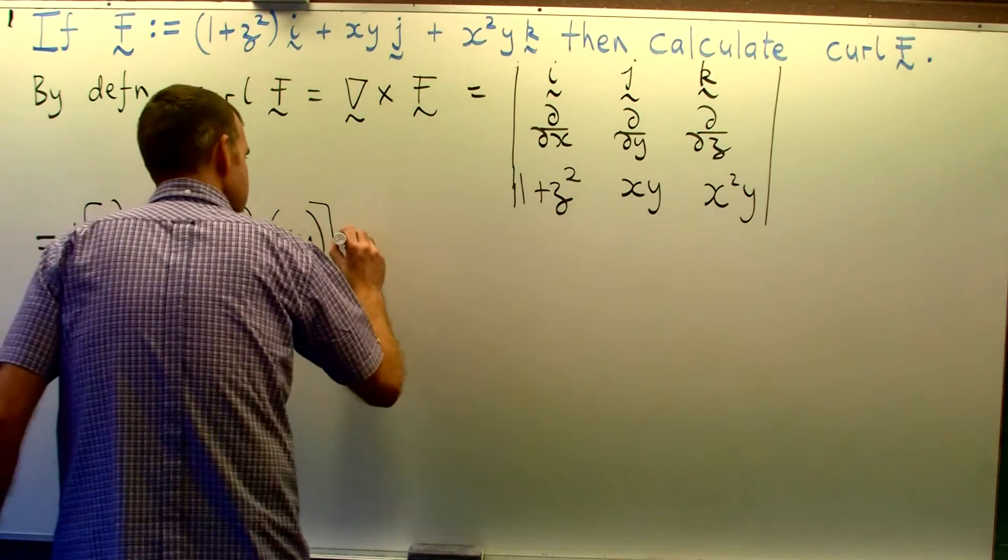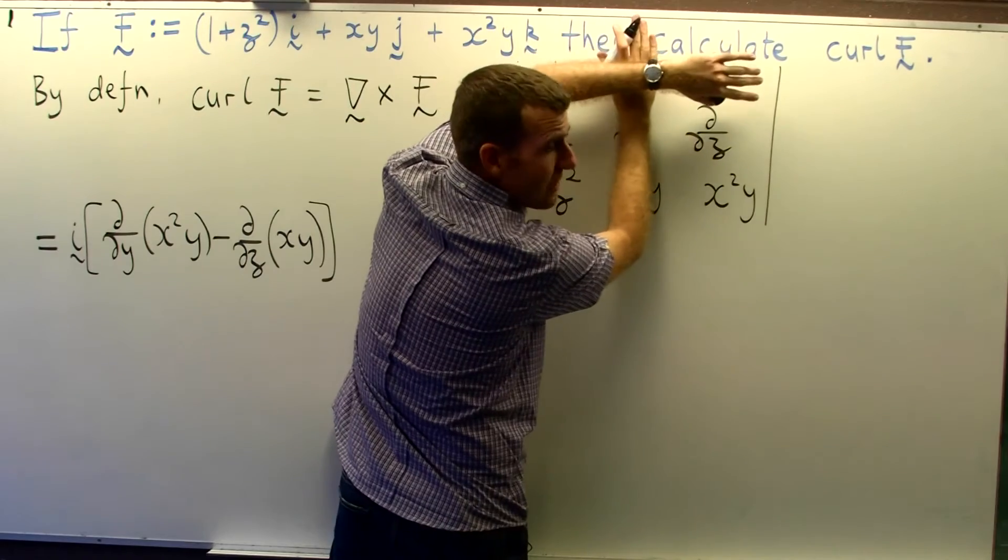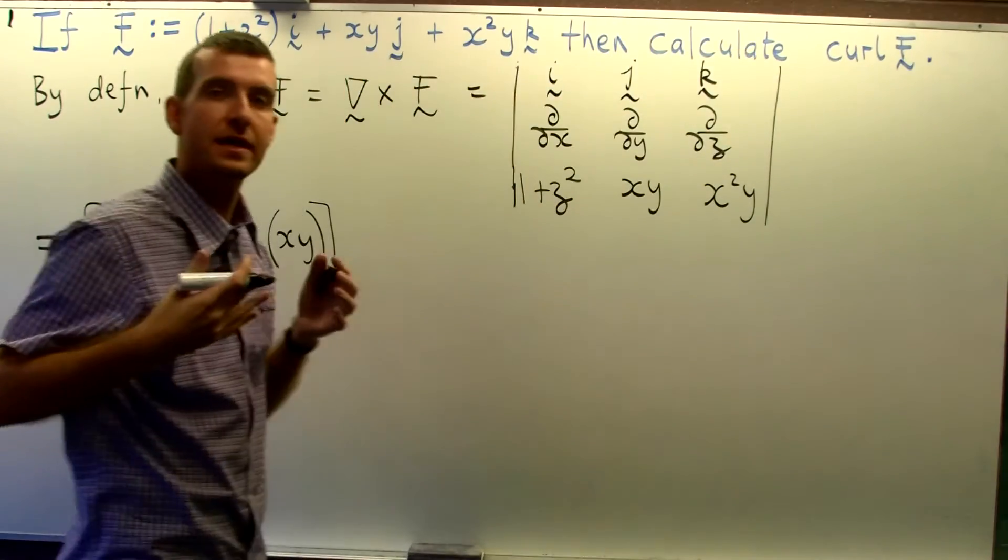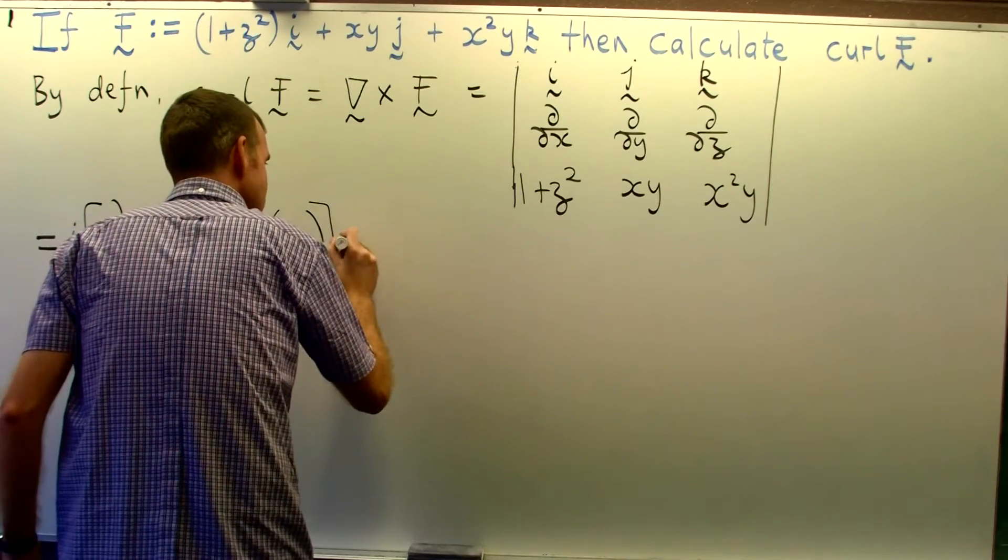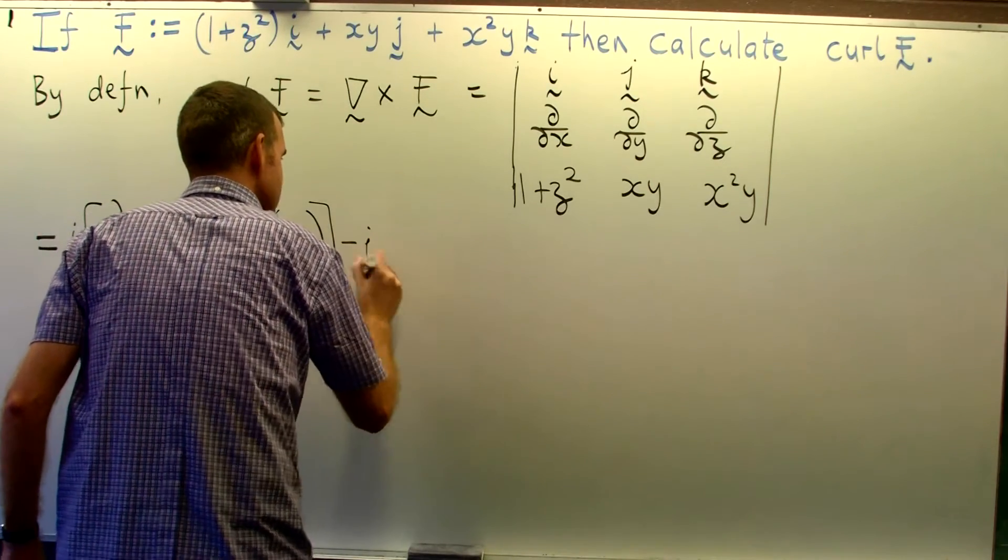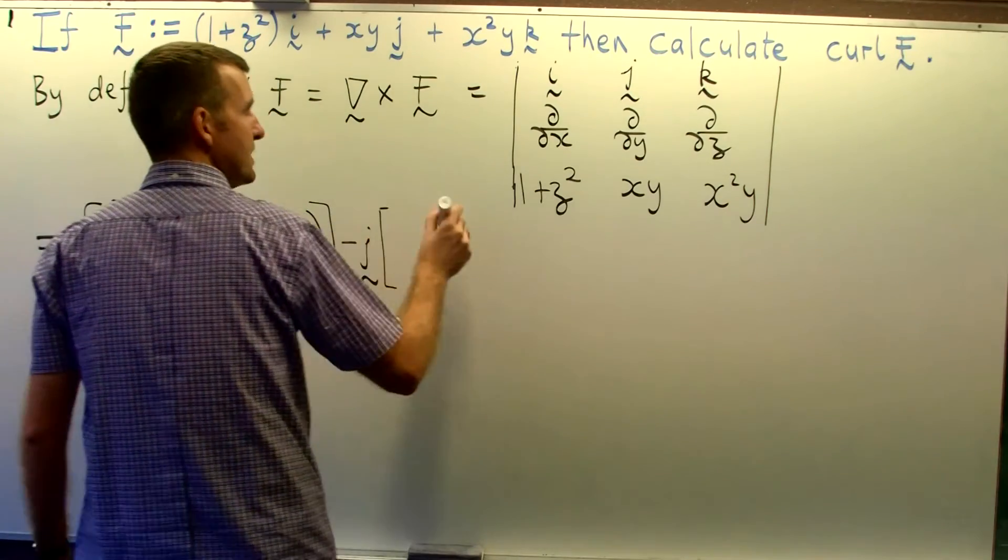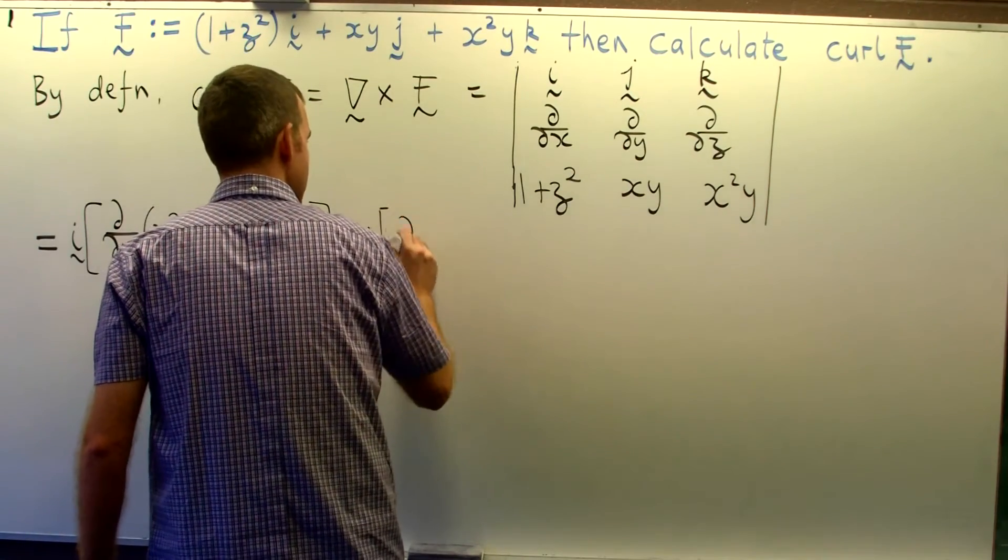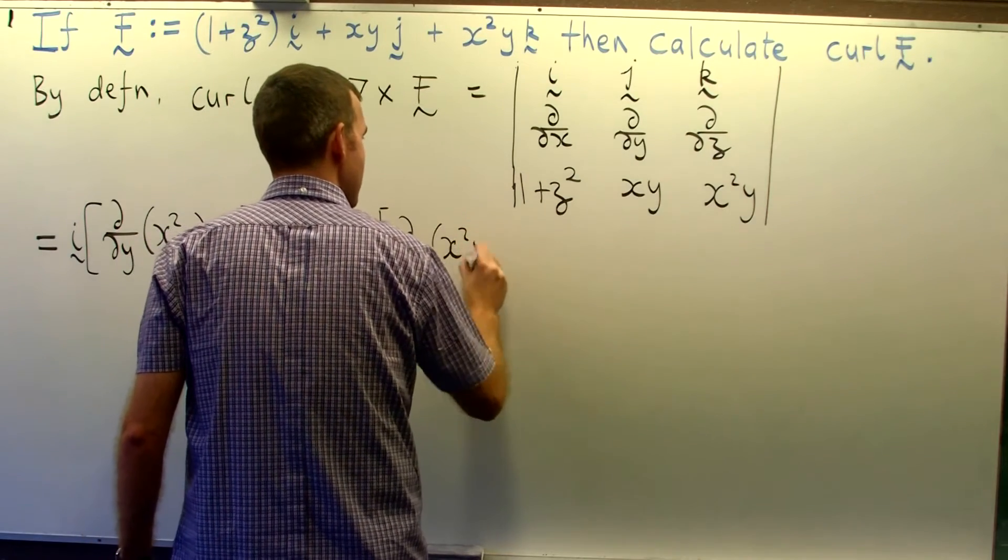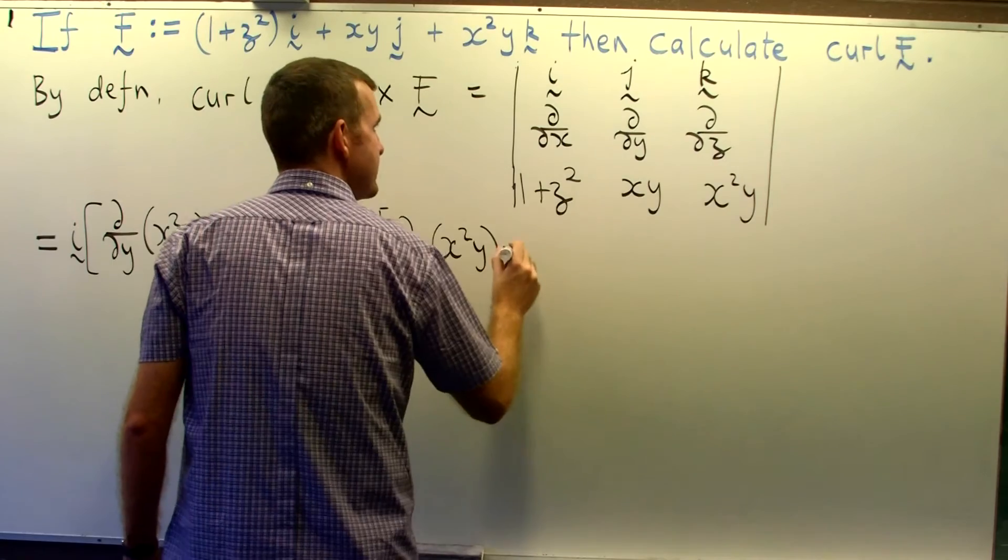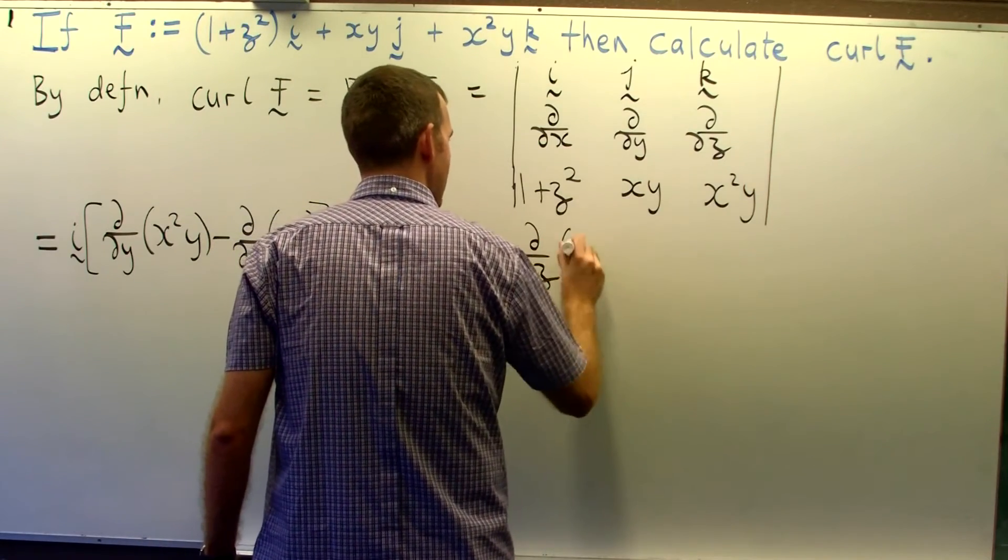Okay so let's move over to the j now. j is in the middle column in the top row. So I cover up and then multiply by the determinant of what's left. Now don't forget the minus sign here. A lot of people forget the minus sign on the j. So that's going to be something like d dx of x squared y minus d dz of 1 plus z squared.